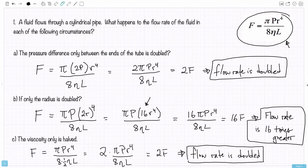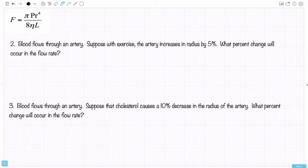Let's move on to question number 2. Blood flows through an artery. Suppose with exercise the artery increases in radius by 5%. What percent change will occur in the flow rate? Well, rather than doubling the radius, we're going to make the radius 5% bigger. By making the radius 5% bigger, what that means is that you could take 1.05 times the radius. That's a 5% increase in the radius, because that is 105% of the radius. And we're replacing the original radius with 105% of the radius, a 5% increase in the radius.